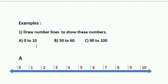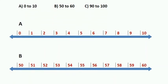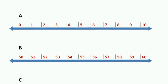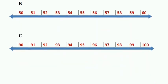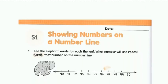Now we move to examples. Draw number lines to show these numbers. Question A: 0 to 10 — use your ruler, draw a line, and mark the numbers. Keep in mind that the gap between each marking should be equal. The same applies for Question B (50 to 60) and Question C (90 to 100) — the markings should be equally spaced throughout.